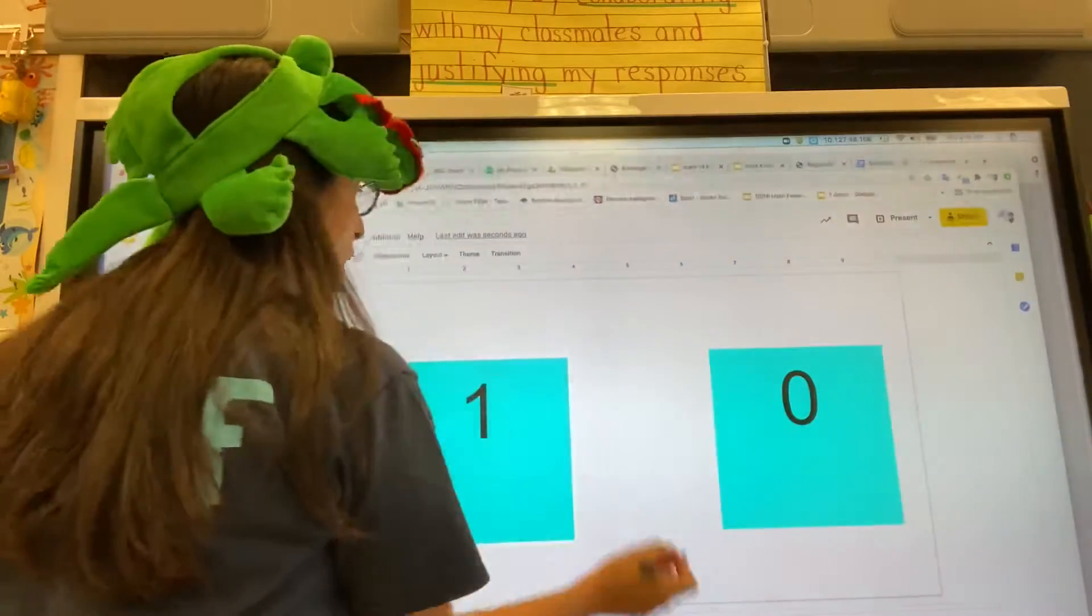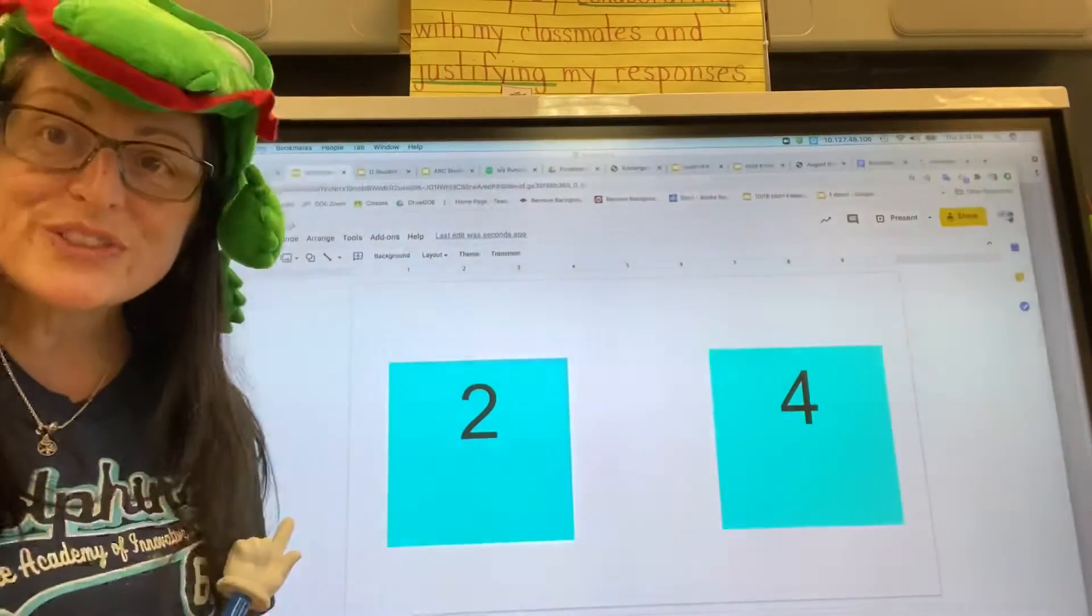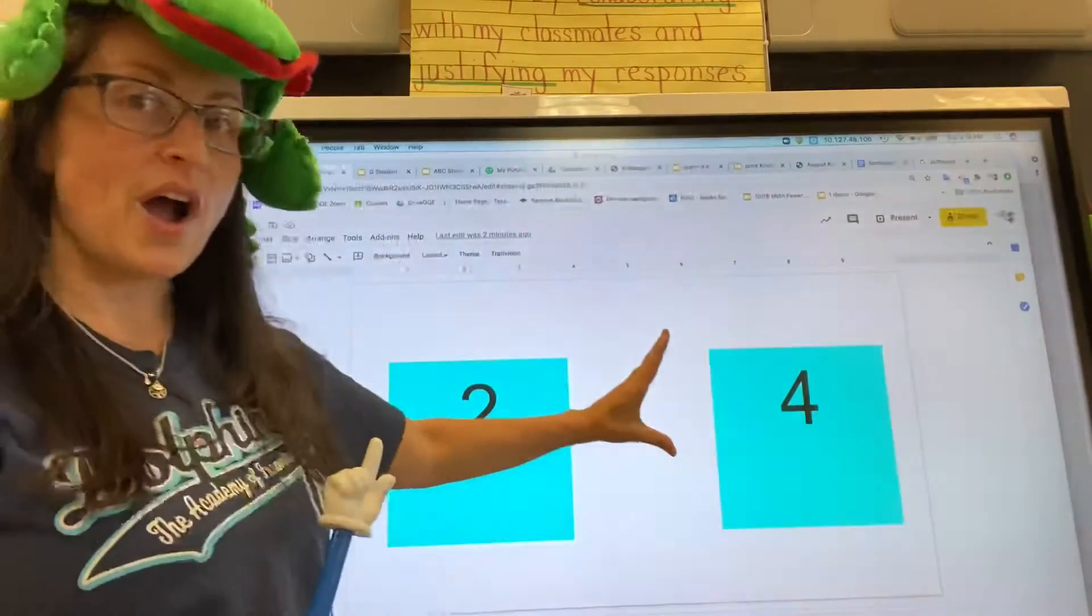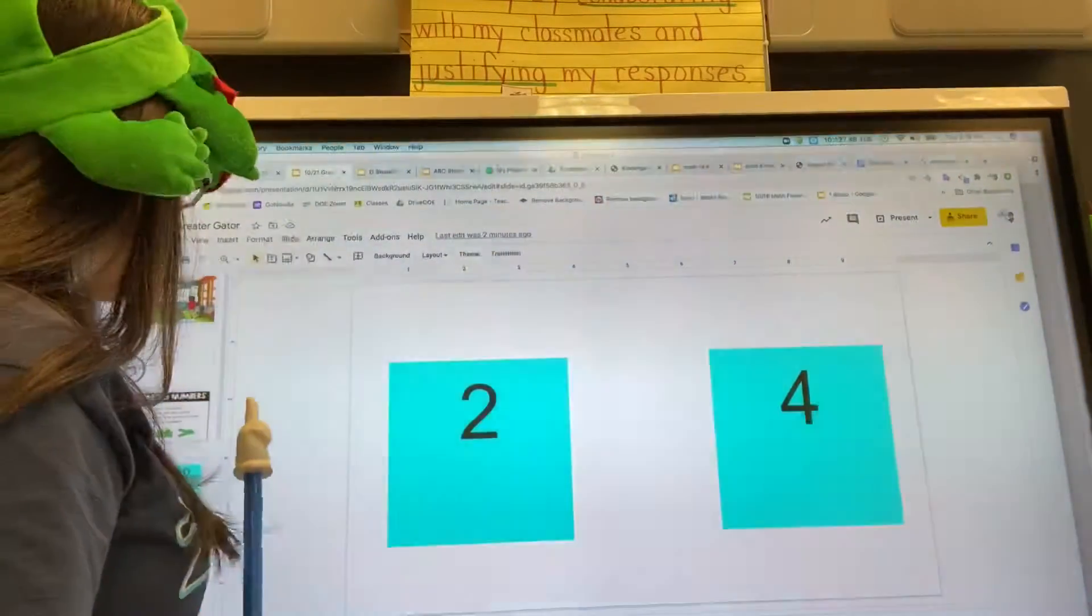Now when you think of your gator with two and four, which ones do you think the gator is going to eat? Four. So he is going to go and eat up that greater number.